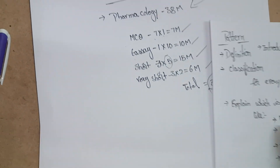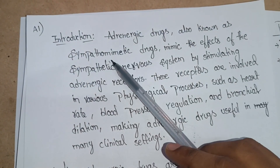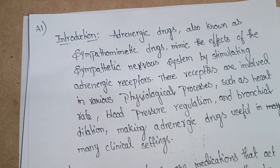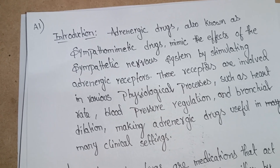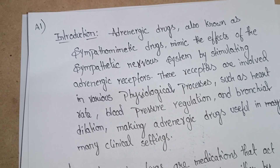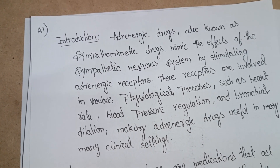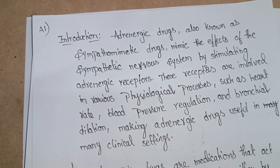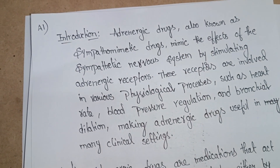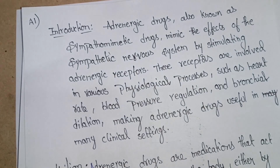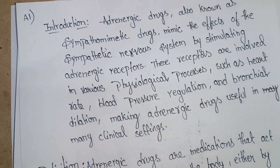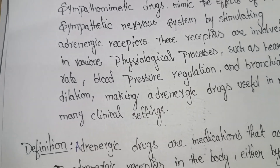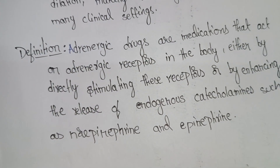First we need to write the introduction. The introduction should go like this: 'Adrenergic drugs, also known as sympathomimetic drugs, mimic the effects of the sympathetic nervous system by stimulating adrenergic receptors. These receptors are involved in various physiological processes such as heart rate, blood pressure regulation, and bronchial dilation, making adrenergic drugs useful in many clinical settings.'